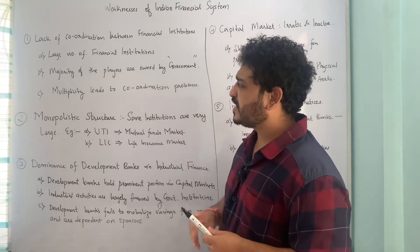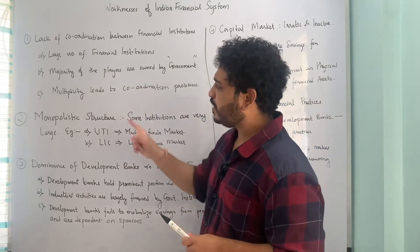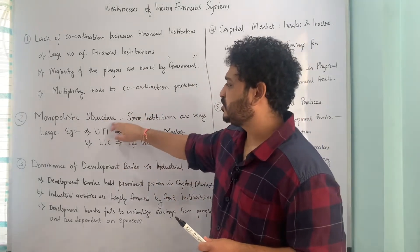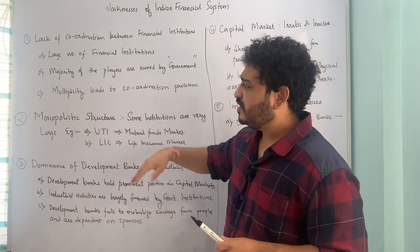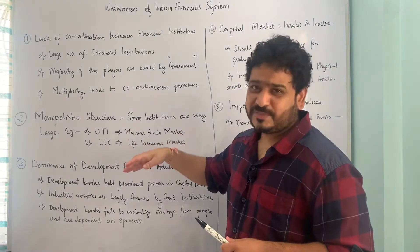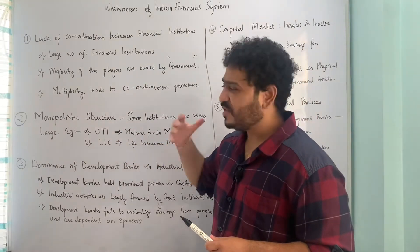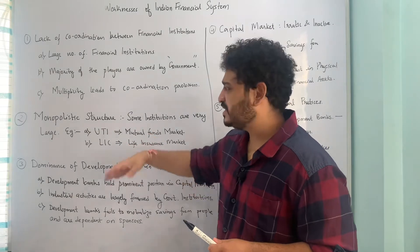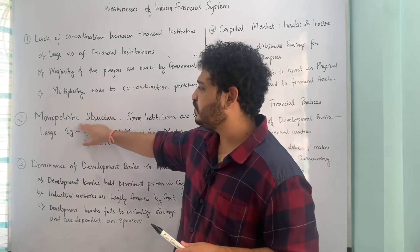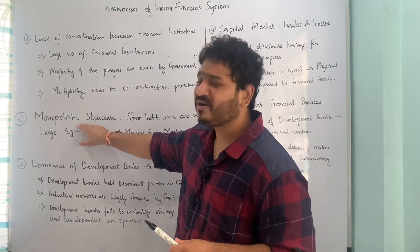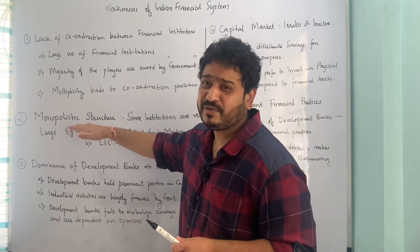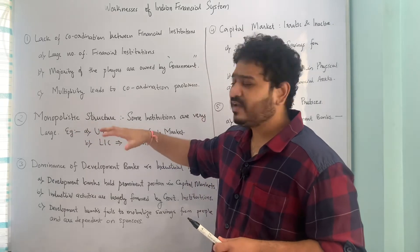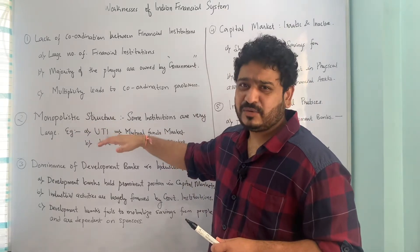The second point of weakness is monopolistic structure. If you are an economics student, you know there are different forms or types of market. This is one sort called an imperfect market, which is a type of imperfect competition.